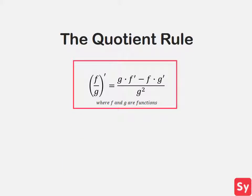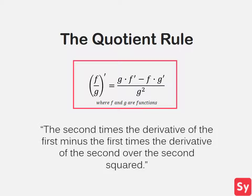Here is the quotient rule. We use the quotient rule when taking the derivative of one function divided by another function. My high school teacher had us memorize it by repeating: the second times the derivative of the first, minus the first times the derivative of the second, over the second squared, where the first is the function f and the second is the function g.